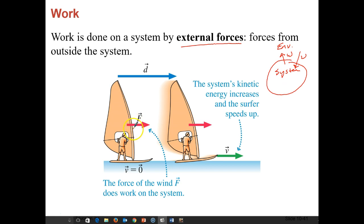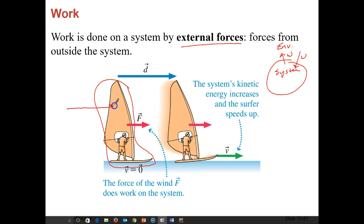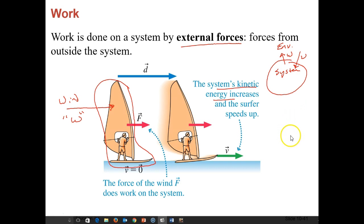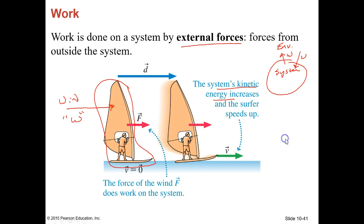The force of the wind does work on the system. If our system is just the sailboarder and the sailboard itself, the wind is outside of that system. So the wind here is doing work, and when it does work it propels the board because it increases the kinetic energy of the system — after that, the surfer speeds up. That is a good example of how an external force does work.